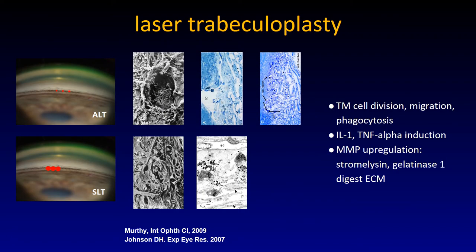Laser modulation. First, an old classic: argon laser trabeculoplasty. 50-micron shots in the meshwork can create big craters with coagulative permanent damage and scarring. They create herniations of the meshwork into Schlemm's canal. Looking at SLT — selective laser trabeculoplasty — which is just as effective: not more, not less, but lowers pressure to the same extent. A little bit better than eye drops, and cheaper, and of course great for a patient who doesn't have to use drops.